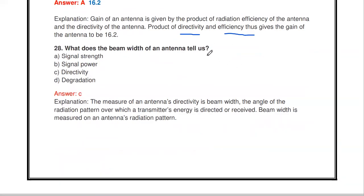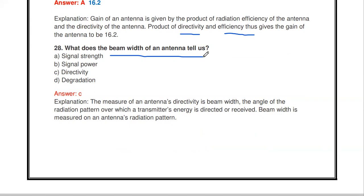What does the beam width of an antenna tell us — signal strength, signal power, directivity, or degradation? The answer is directivity. From the beam width, we can calculate the directivity of the antenna. Beam width is the measure of antenna directivity — it is the angle of the radiation pattern over which the transmitted energy is directed or received.